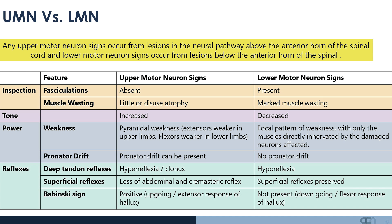The reflexes are also affected in a characteristic manner. The deep tendon reflexes become hyperreflexic in upper motor neuron conditions and hyporeflexic in lower motor neuron conditions. Remember that upper motor neuron signs occur from lesions anywhere in the neural pathway above the level of the anterior horn of the spinal cord.